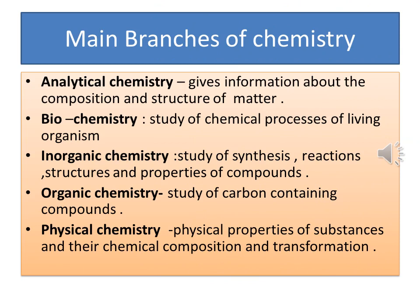Basically there are five branches of chemistry: analytical chemistry, biochemistry, inorganic chemistry, organic chemistry, and physical chemistry. In analytical chemistry we get information about the composition and structure of matter — how much percentage of components are required to make a compound or substance. Here, matter is anything that has mass and occupies space. In biochemistry, we study the processes taking place in a living organism, and those processes are known as biochemical processes.